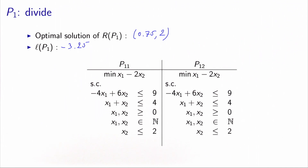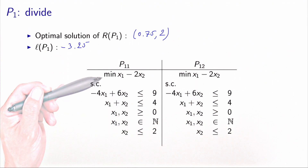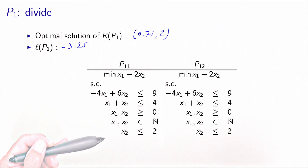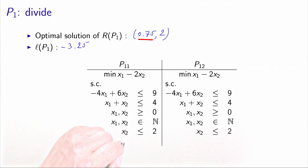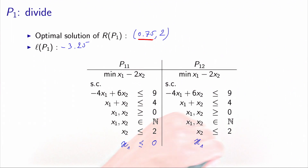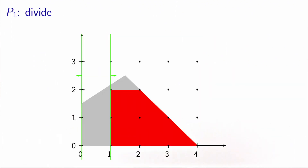Now we need to divide again, generating two subproblems P11 and P12. I include two copies of problem P1 and apply the same method. The only non-integer variable is x1, which equals 0.75. So I impose the constraint that x1 must be either less or equal to 0, or greater or equal to 1. This partition is represented in the illustration.